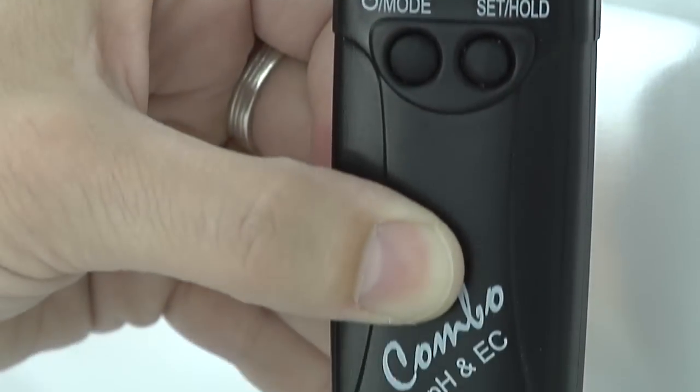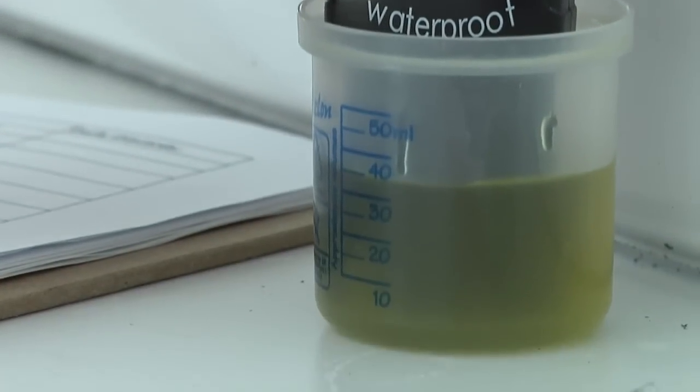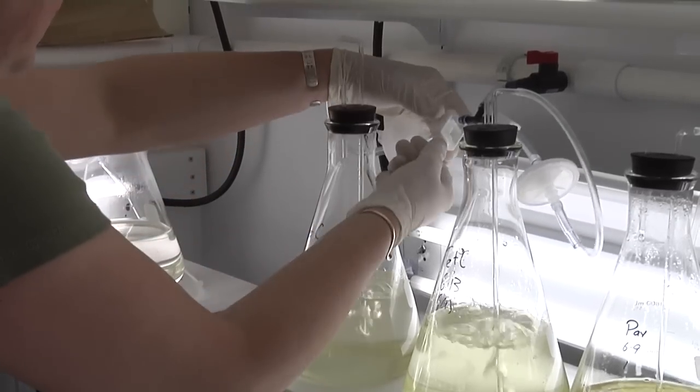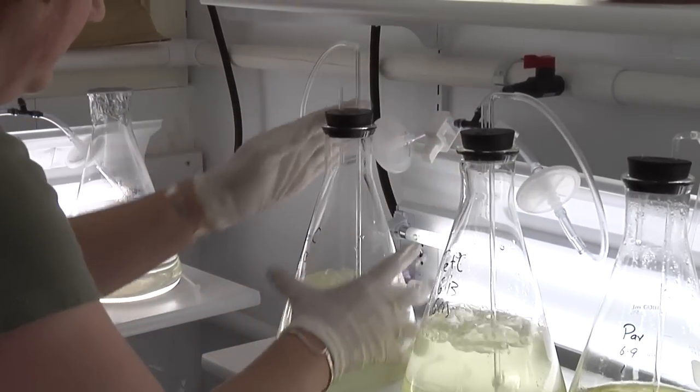If the samples are getting too acidic, we will decrease the amount of carbon dioxide that we're giving them, which turns to acid if it's not being used.